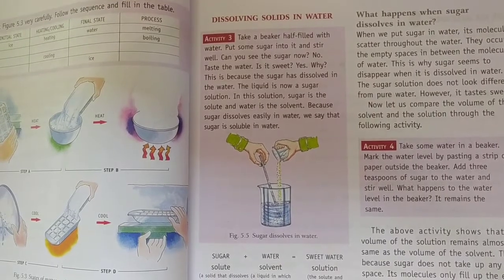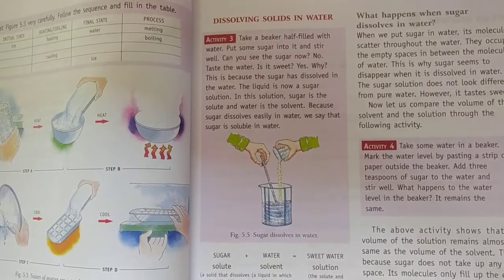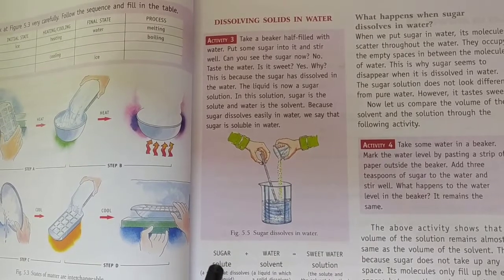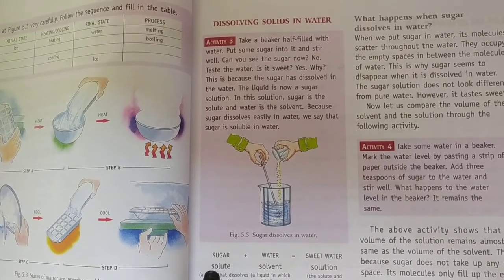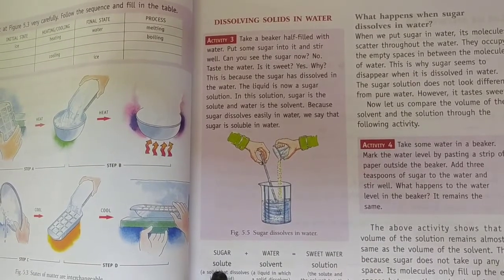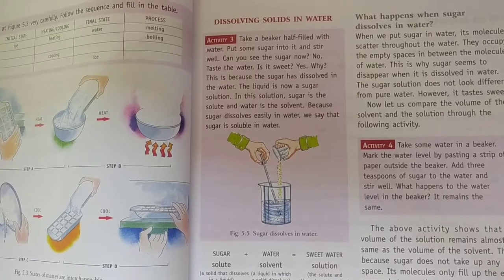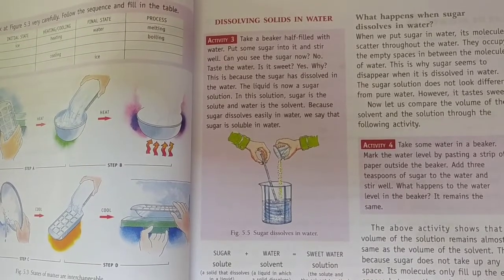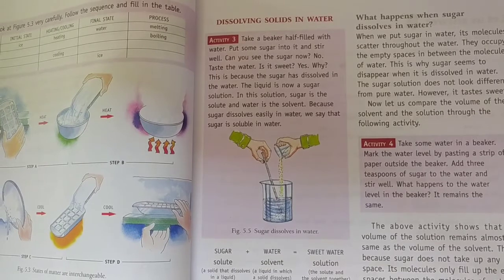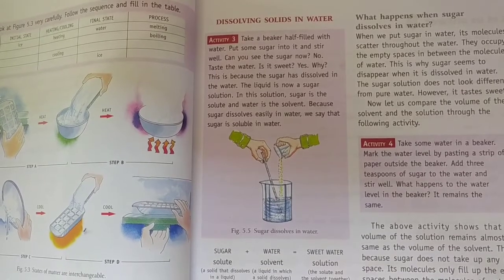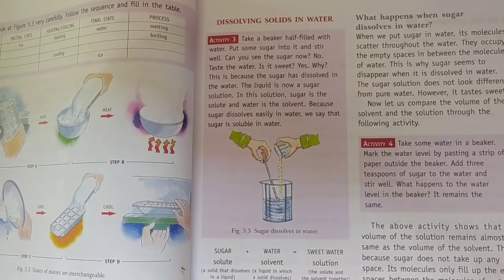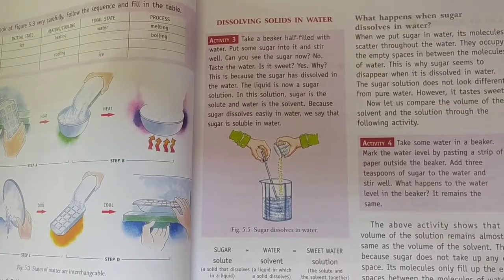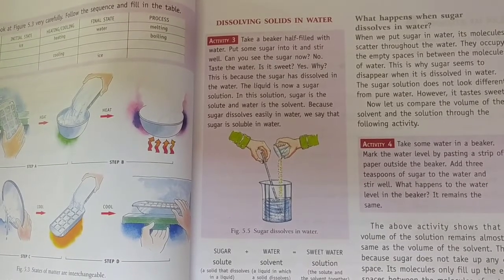The water molecules have gaps between them, and the sugar solute particles fill those gaps. You can observe that if you add 2, 3, 4 — even up to 10 teaspoons of sugar — and keep stirring, the sugar keeps dissolving into those gaps.